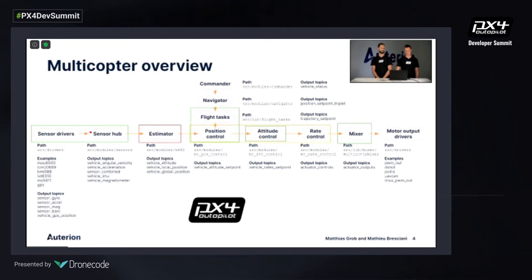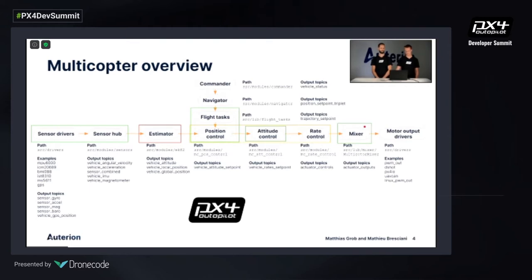The sensor data gets further processed in the sensor hub, which we'll cover more later. Then it goes through an EKF — the estimator — which is covered by Paul Riceboro tomorrow. From the top comes the behavioral path: your input comes through here — what mode you're in, how you want to fly, and what your stick input is from the remote. This goes into the position control, attitude control, and rate control pipeline for multi-copter. We'll cover some of the flight task updates and attitude control in this talk. Then it goes through the mixer to determine what each motor needs to do, and there's a further talk about control allocation later in the Dev Summit.